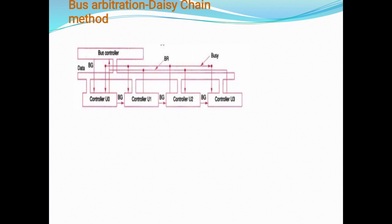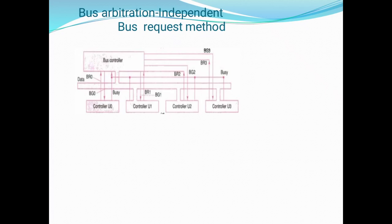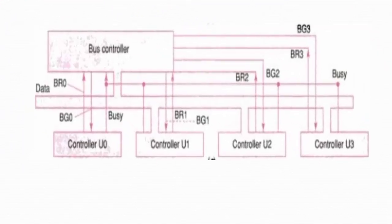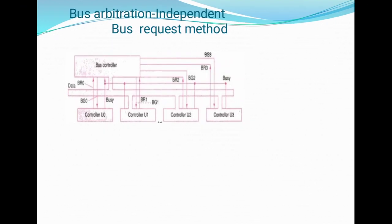This shows bus animations and data. This is the diagram for bus arbitration independent bus request method. Here we have four controllers used for bus controlling.